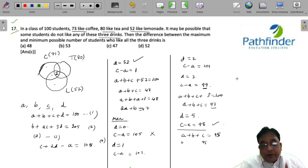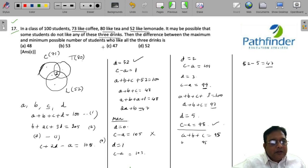The minimum possible value of D, of those who drink all the three drinks is 5. And therefore, the required answer is 52 minus 5, that is 47.